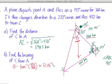And remember, we're not quite done. We need to add that to the 143 degrees that we already have to get the true bearing of C from A. And so we add 52.06 to 143 degrees, and we get about 195 degrees.